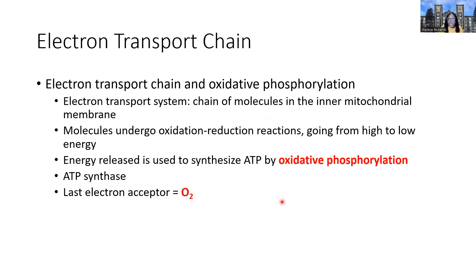In the electron transport chain, there is a chain of molecules — complexes — inserted in the inner mitochondrial membrane. Molecules pass from oxidized to reduced form, from high to low energy, passing electrons from one complex to the next. As they do so, a gradient is generated, and we harness that energy to phosphorylate 34 ATP.